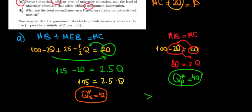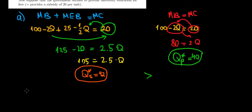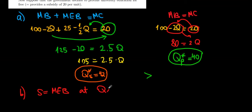Now let's solve part B: what are the total expenditures on a Pigouvian subsidy on university education? Because there are positive externalities, we want to stimulate more education. We offer the university a subsidy equal to the marginal external benefit at the social optimal level - the same logic as setting a tax equal to marginal damage at the social optimum.